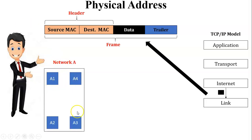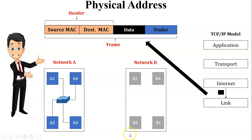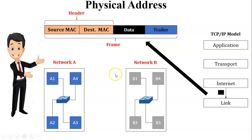Let us take one scenario. Here is Network A with four PCs — A1, A2, A3, and A4 — all connected with each other through a switch. Another network, Network B, has four PCs — B1, B2, B3, and B4 — connected through a switch. Since Network A and Network B are different networks, we cannot connect them through a switch alone.